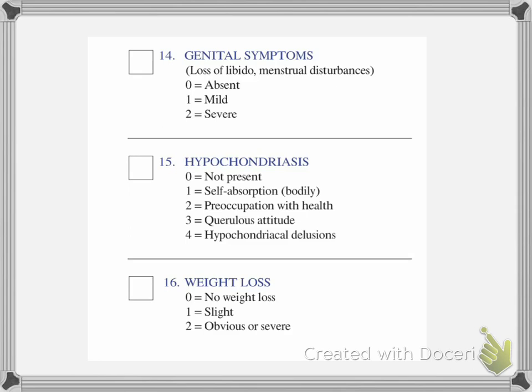Question fifteen is hypochondriasis — are they self-absorbed, with a preoccupation with health? If it's extremely mild, mark a one; if absent, a zero. If they have delusions that something is constantly wrong and you cannot convince them otherwise, that's a four. Question sixteen is weight loss — whether it's slight, obvious, or severe; mark accordingly.